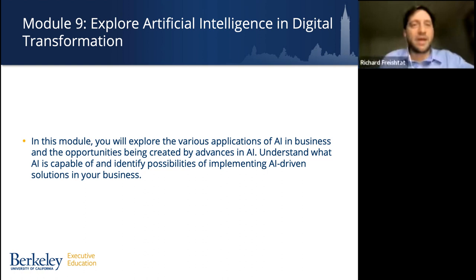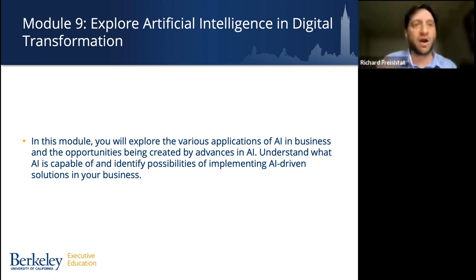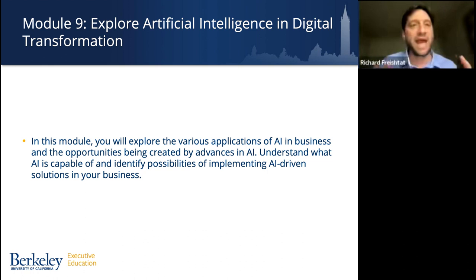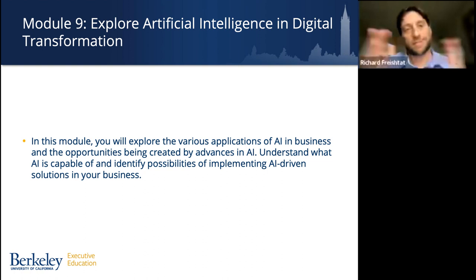Module nine leans into artificial intelligence — specifically exploring AI in digital transformation. This isn't about uber-technical details of AI; it's a strategy-level perspective on how AI as a unique technology can drive digital transformation efforts. You'll look at various business applications, the opportunities created by advances in AI, understand what AI is capable of and what it's not capable of, and identify possibilities of implementing it in your own business — starting to really bring it back to your business and what you'll work on for the capstone project.